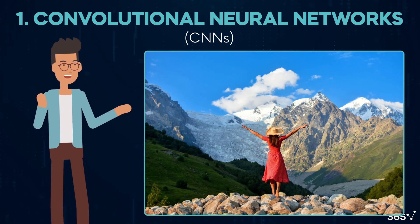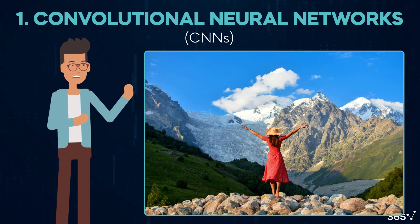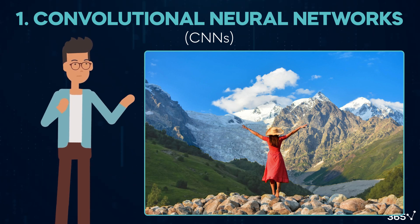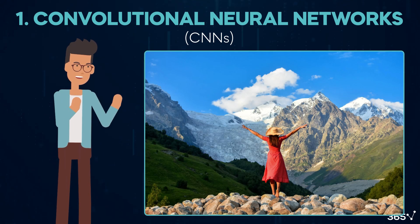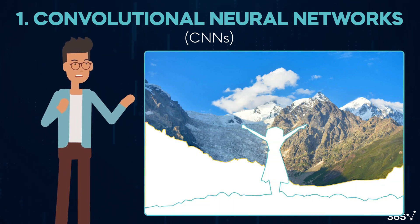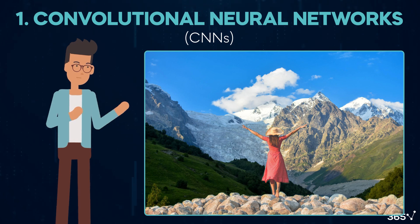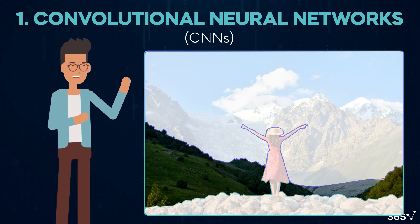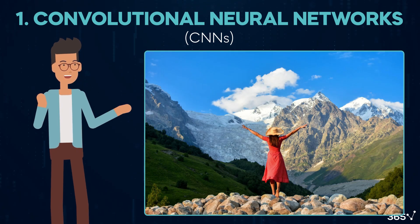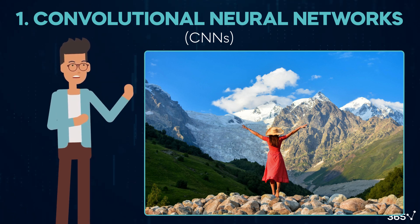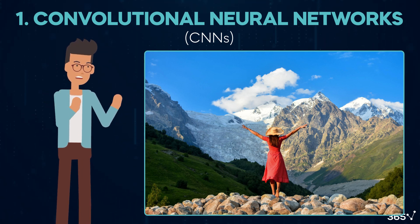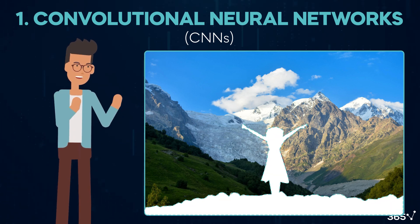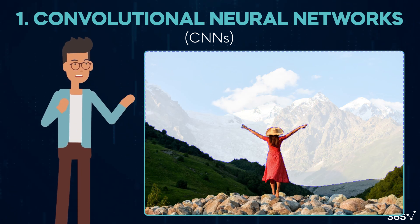In contrast, CNNs are great at capturing spatial hierarchies in images — meaning they organize elements in an image based on their importance and depth. Imagine looking at a picture where some things seem closer and others farther away: the foreground is up close, the middle ground is between, and the background is distant. CNNs process information through a layered structure, learning basic features like object edges in initial layers and progressively capturing complex, high-level features such as shapes and objects in deeper layers.